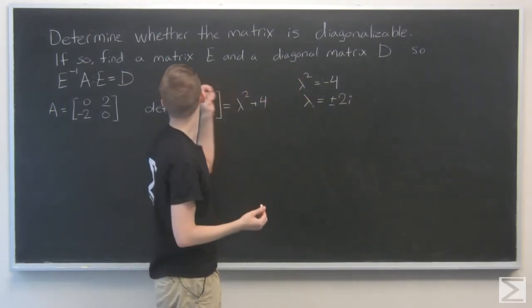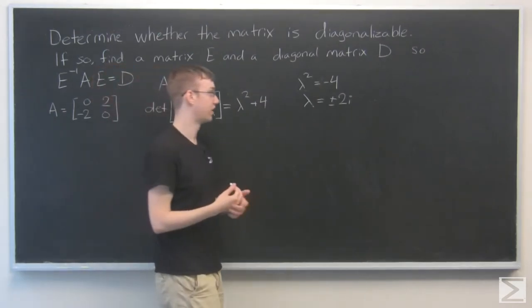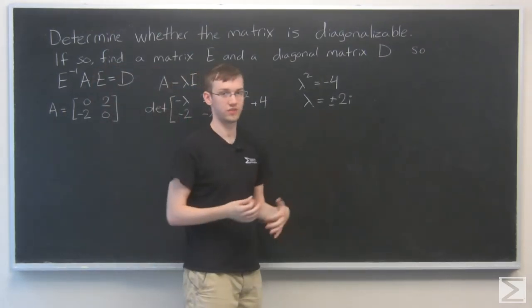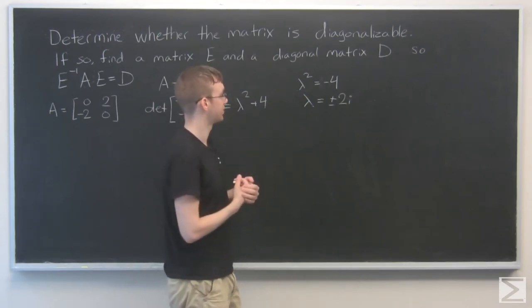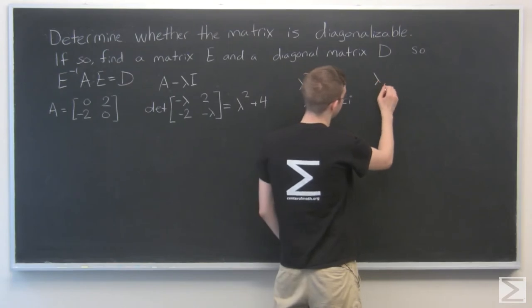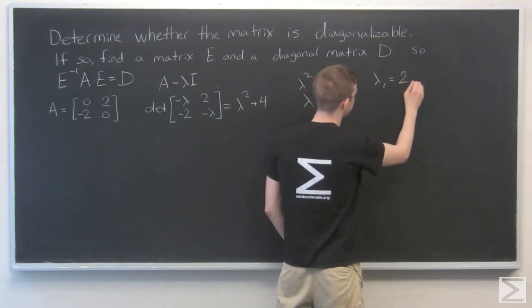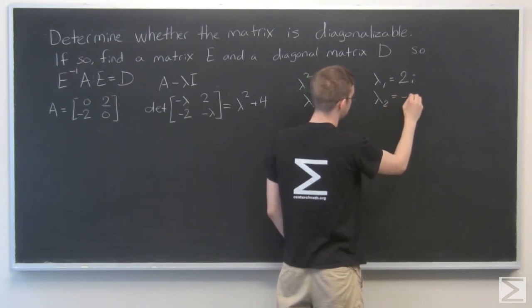Okay, so first I didn't mention this: as for determining whether the matrix is diagonalizable, we got distinct values here. They're not the same value, so we're good. This matrix is diagonalizable. So let's assign lambda 1 equal 2i and lambda 2 as minus 2i.